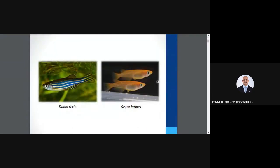There are two model organisms which have been referenced in molecular biology for studying the vertebrate model. In the previous lecture, I showed you the nematode model, which is an invertebrate model. Danio rerio and Oryzias latipes are two vertebrate models utilized to study molecular mechanisms. Danio rerio is referred to as the zebrafish and Oryzias latipes is the medakafish. Both organisms have a very small genome and a short life cycle, making them ideal for laboratory use.